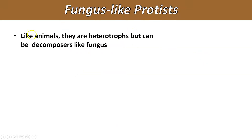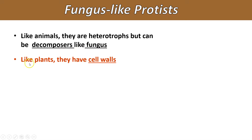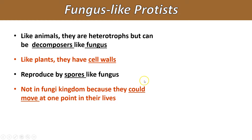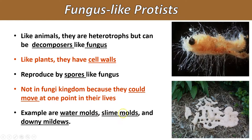The last category is fungus-like protists. Like fungi, they are also heterotrophs and can be decomposers. Similar to plants and fungi, they do have a cell wall, but their cell wall is not the same kind fungi have - they don't have chitin. They have cellulose, just like plants and some bacteria. They're able to reproduce using spores, the same way that fungi do. They're not in the fungi kingdom because they're able to move at early points in their lives - fungi cannot move. Examples are water molds, slime molds, and downy mildews. Some of them are also parasitic and can live and eat on living tissue, as you can see in this picture of an infected fish.